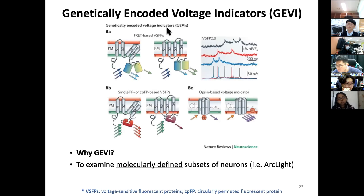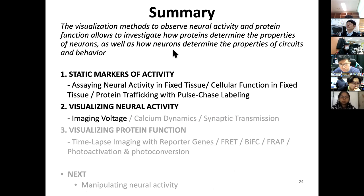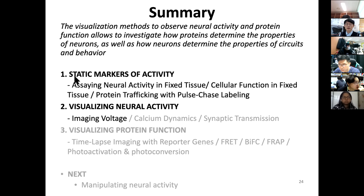There are also genetically encoded voltage indicators (GAVIs/GEVIs) that allow imaging of molecularly defined subsets of neurons in transgenic animals. To summarize: visualization to observe neural activity and protein function allows us to study how proteins determine the properties of neurons, how neurons determine the properties of circuits, and ultimately behavior. Today we covered static markers and the voltage component of visualizing neural activity.